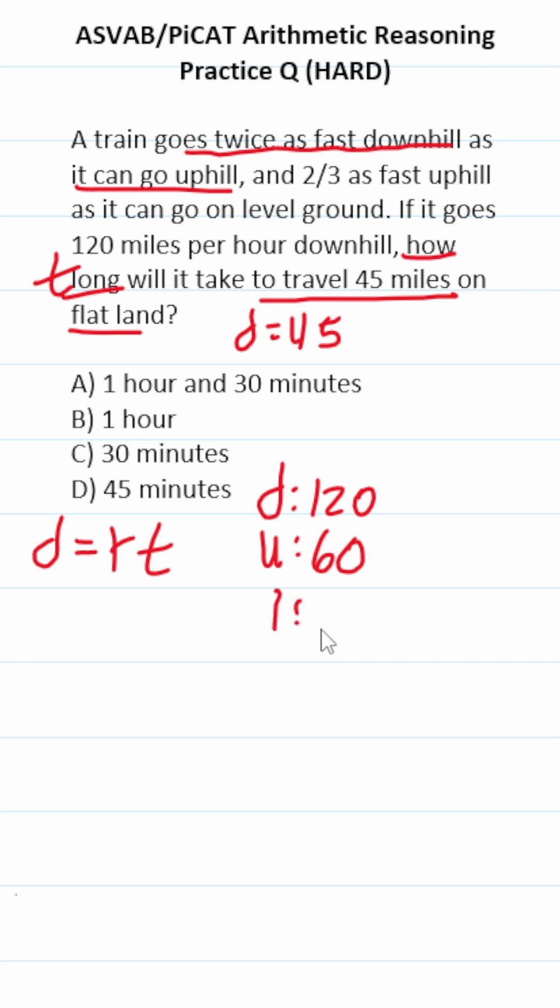Finally, we're going to figure out how fast it's going across level ground. It says it goes two-thirds as fast uphill as it can go on level ground. So 60 miles per hour equals two-thirds as fast as the train can go on level ground. We're going to solve this for L, and that will be our rate to plug into the distance formula.